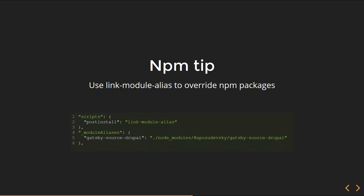Gatsby is relatively young, so you might be missing some functionality or need to write some patches. I encourage you to contribute to Gatsby — and by the way, you will get free swag from them. They send things like t-shirts and baseball caps for contributions. In the meantime, while you are waiting for your pull request to be approved by Gatsby, what you can do is use a module alias. This is an NPM package which allows you to overwrite a contributed NPM package with your own fork or Gatsby package.